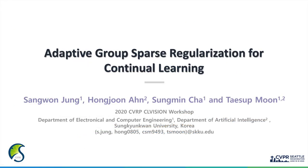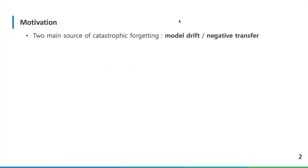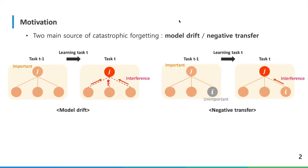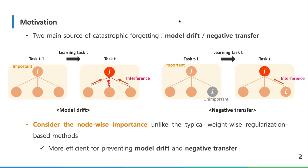Hi, I'm Sang Won-jung. This is joint work with Hong Jun-an, Sang Min-cha, and Taeshan Moon. We are going to talk about adaptive growth sparse regularization for continual learning. In continual learning, there are two main sources for catastrophic forgetting: model drift and negative transfer. Model drift means the incoming weights of important nodes get changed, and negative transfer means the interference of important nodes. We can prevent these sources by considering the node-wise importance.